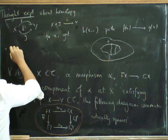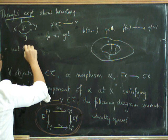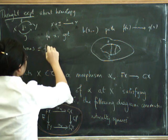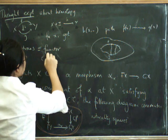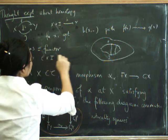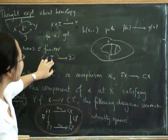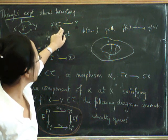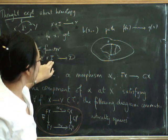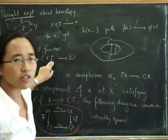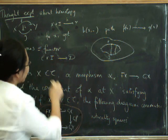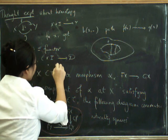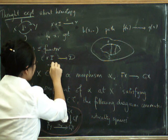But you could look at the natural transformation as being a functor, a functor from C cross I to D, where this I has to be a bit like the categorical version of this I. Now what's this I up here? It's the topological interval. So this I ought to be the categorical interval, whatever that is. Well, what do you think the categorical interval is? The categorical interval is a very small category that consists of an object at the beginning and an object in the end, and the morphism going in between them.